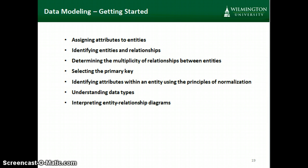As we begin our data modeling, we need to assign our attributes to entities using the three rules of normalization we just discussed. Then we need to identify the entities and the relationships to each other, determine the multiplicity of the relationships — which I'll explain in a moment — select the primary key, make sure attributes are assigned based on the principles of normalization, understand the data types, and then we'll look at interpreting entity relationship diagrams.